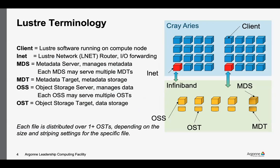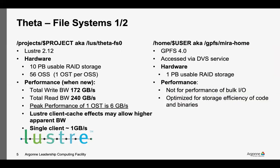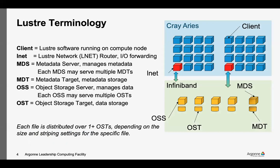I'll talk a little bit about Lustre terminology. There's a client — the client runs on a compute node, on a login node, on DTN nodes for data transfer. The client is the interface from an end user or application code into the Lustre file system. We also have LNET Lustre network routers and IO forwarding. The file system in Lustre is divided across two separate services: the object storage server with object storage targets, and metadata servers with metadata targets.